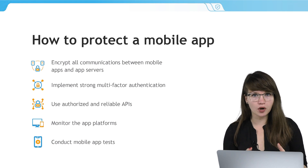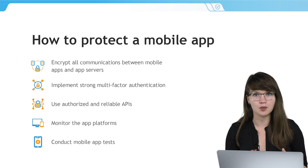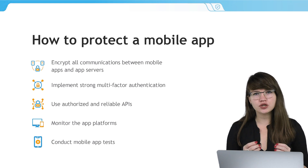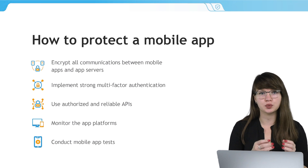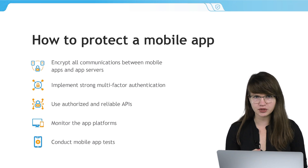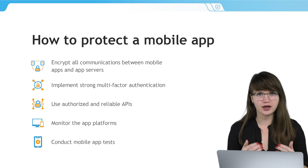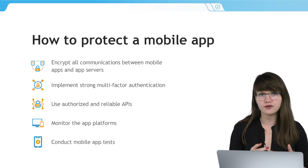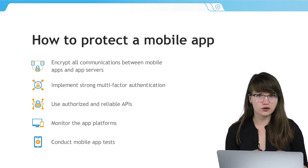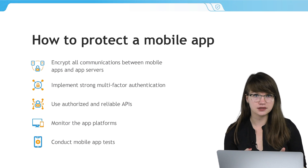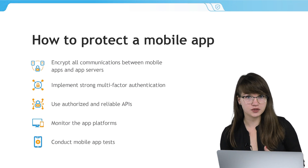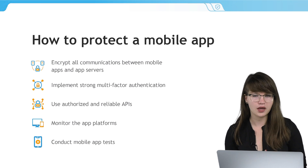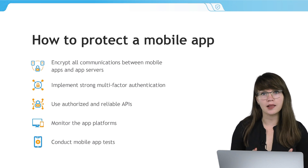In order to avoid such problems, it is necessary to protect the mobile app. Here are some tips on how to do it: make sure that all communications between mobile apps and app servers are encrypted; implement strong multi-factor authentication so that users will have to double-approve their identity; use authorized and reliable APIs; monitor the app platforms for apps that illegitimately use the brand name and logo; and of course, conduct mobile app tests.